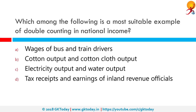Which among the following is the most suitable example of double counting in national income? Double counting in accounting is an error whereby a transaction is counted more than once for whatever reason.